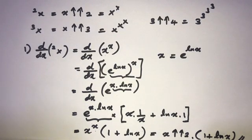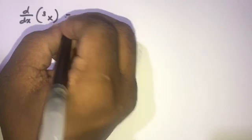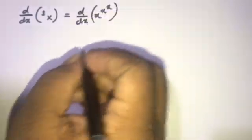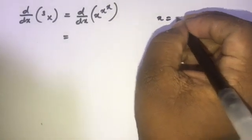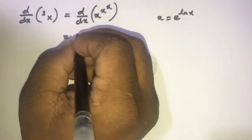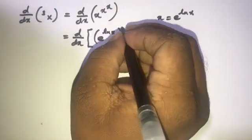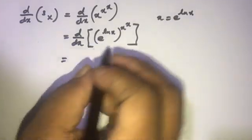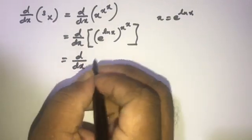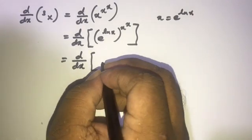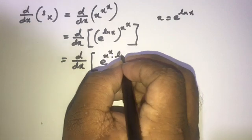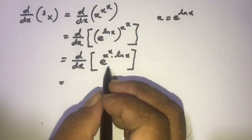Now for question two: d/dx of x to the superpower of 3. We know x equals e to the ln x, so we can write d/dx of x to the x to the x power as d/dx of e to the x to the x times ln x.